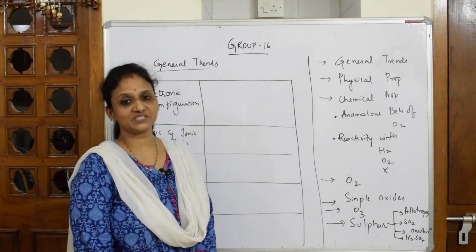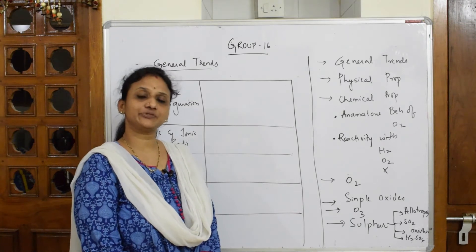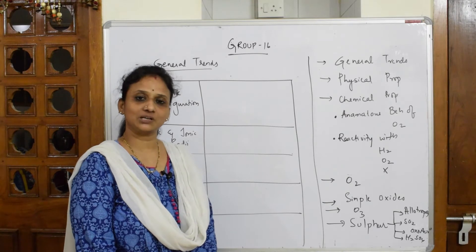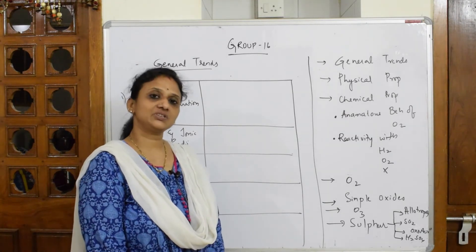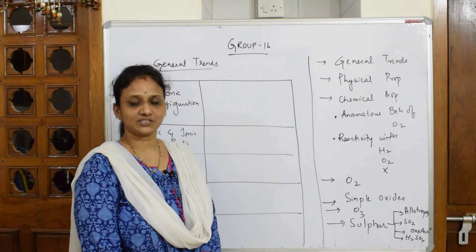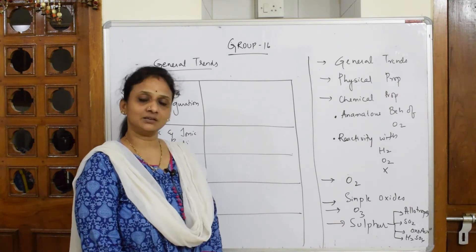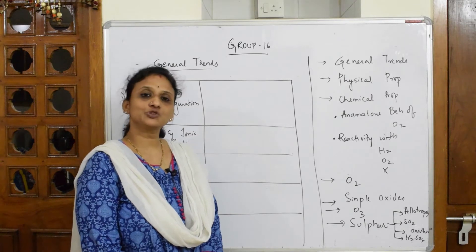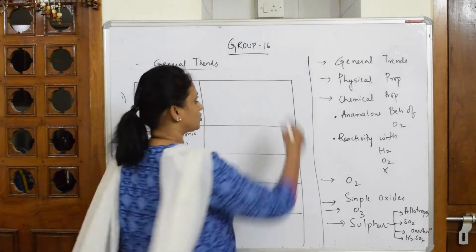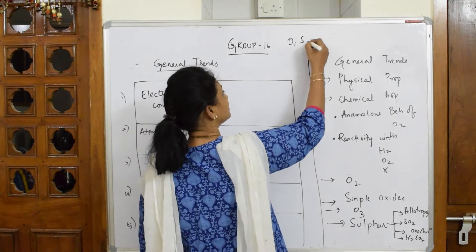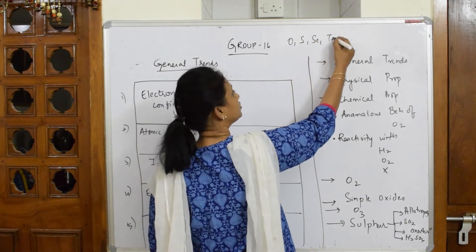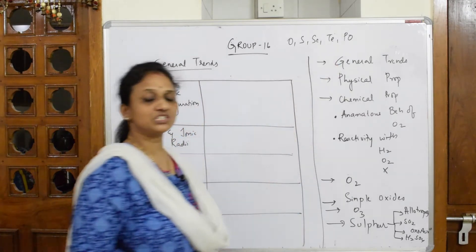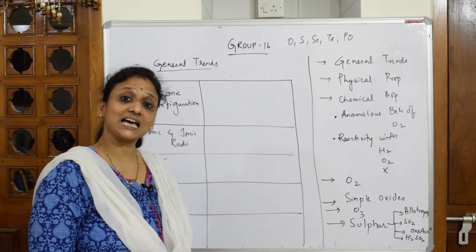Let's come back and start with the Group 16 elements. We've already completed Group 15, then went into Group 18. Now I've come back to Group 16. In Group 16, which are called chalcogens — the oxygen family — the elements include oxygen, sulfur, selenium, tellurium, and polonium. These are all called chalcogens.